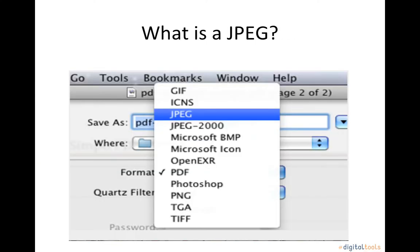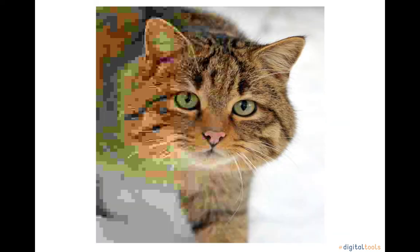The JPEG standard specifies the codec which defines how an image is compressed into a stream of bytes and decompressed back into an image, but not the file format used to contain that stream. The EXIF and JFIF standards define the commonly used file formats for interchange of JPEG compressed images.